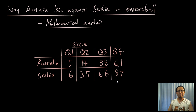Hey guys, Eddie the Magic Monk here. I just want to do a bit of an analysis on why Australia wasn't able to catch up against Serbia in basketball from a calculus perspective, because that's what we're currently teaching at school right now.